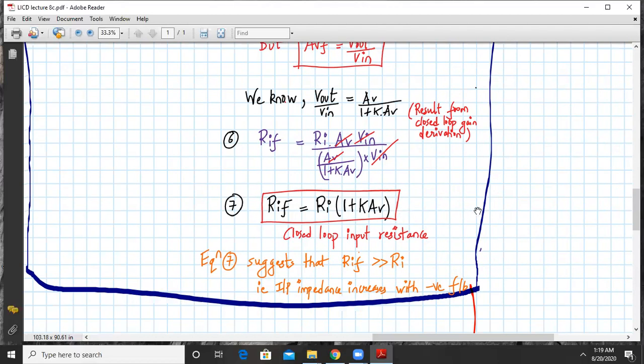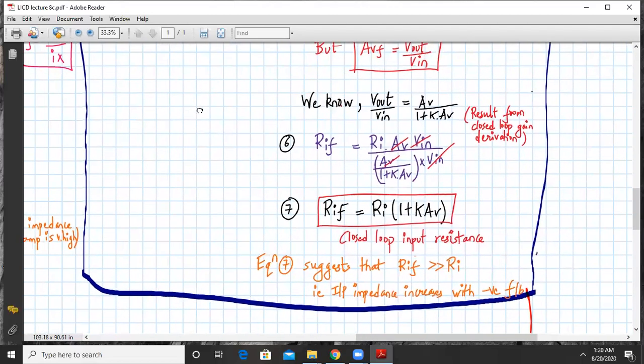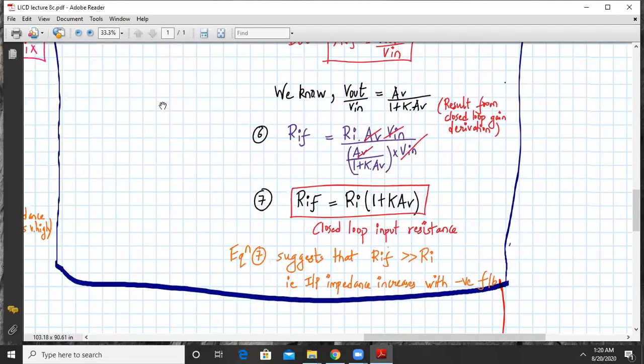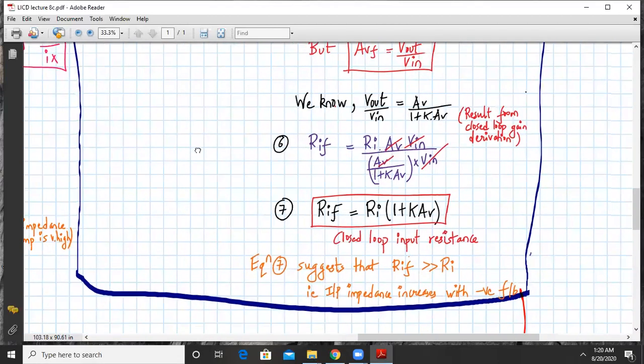This is my expression of closed loop input impedance, and it suggests that your RIF is much greater than your input impedance without feedback. That means with negative feedback, the input impedance of a non-inverting amplifier increases, which was not the case for inverting amplifier. It was just external resistor component R1. In this case, the advantage of using non-inverting amplifier is its input impedance is tremendously high.